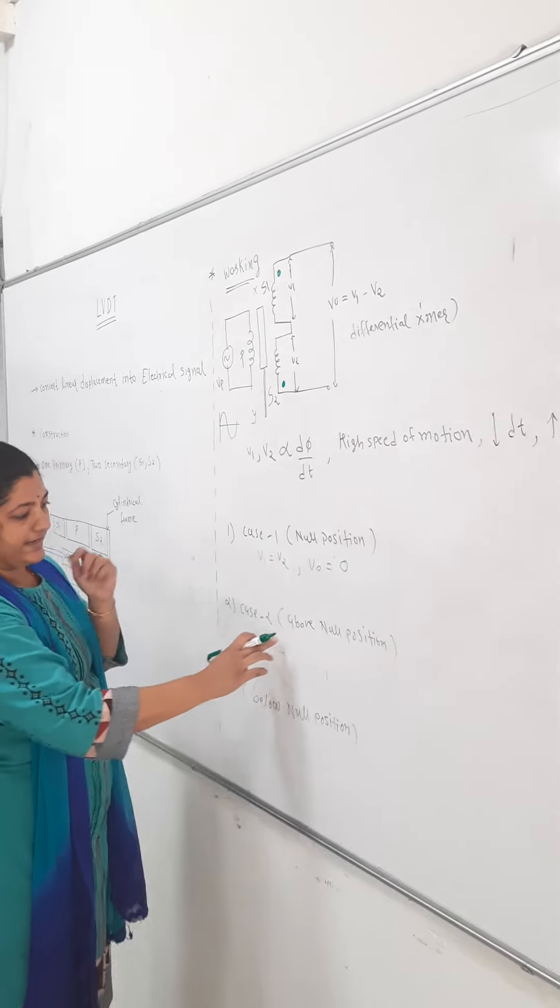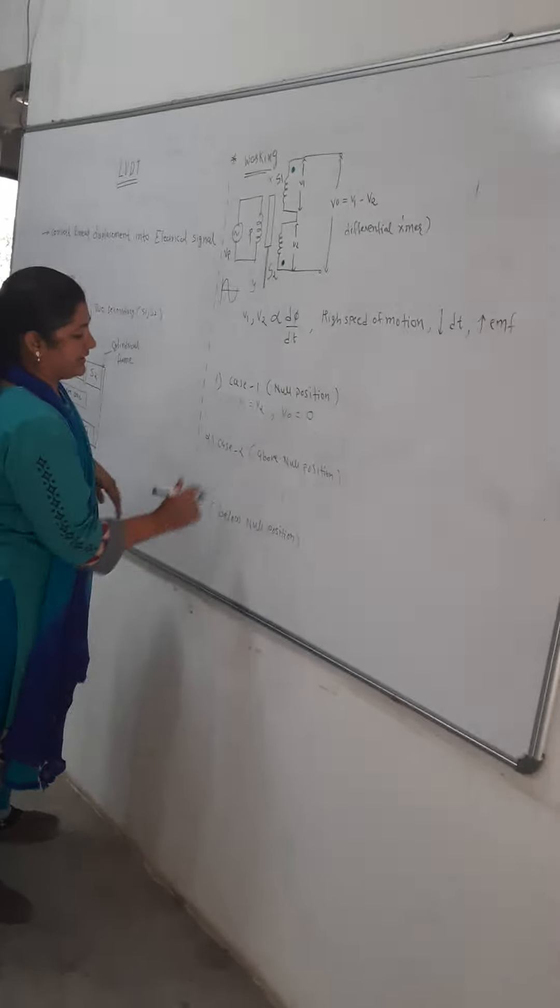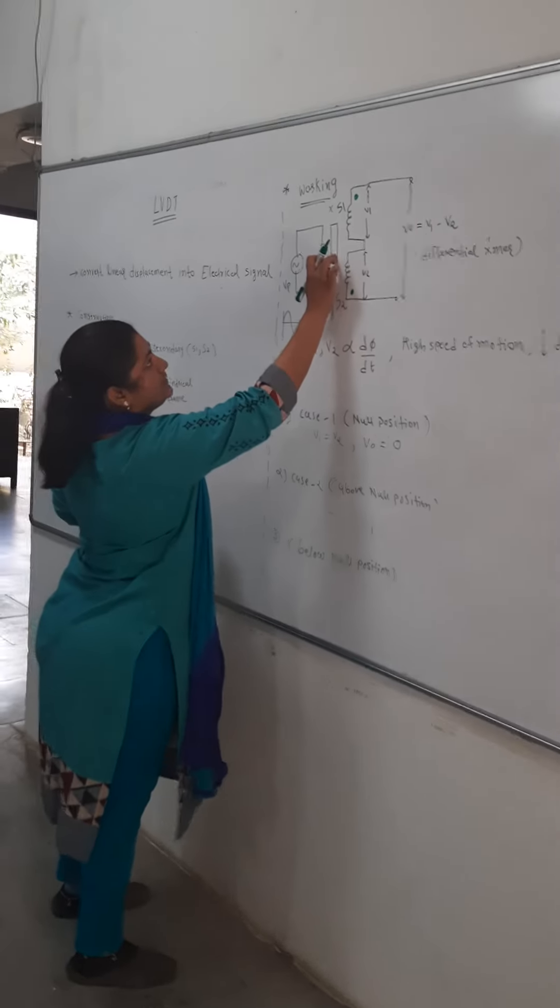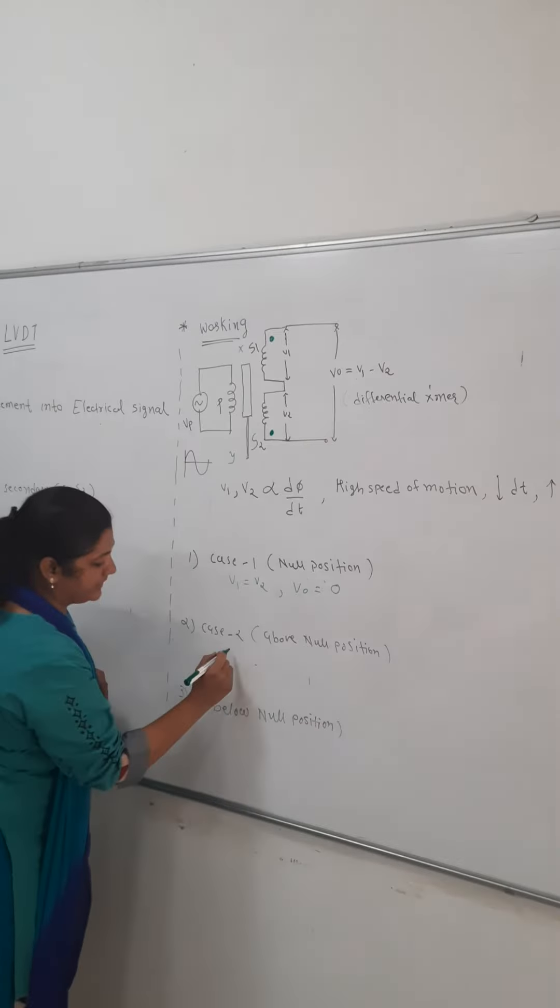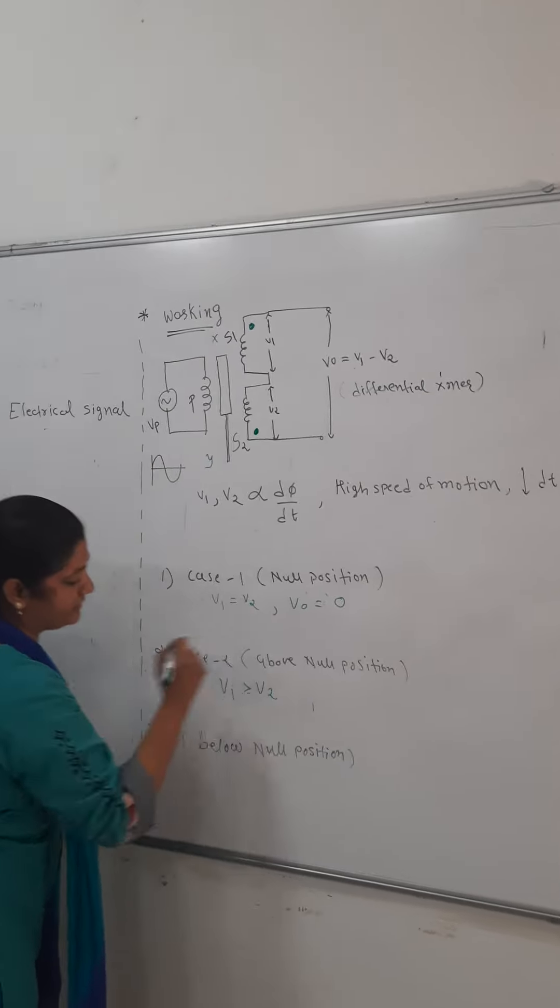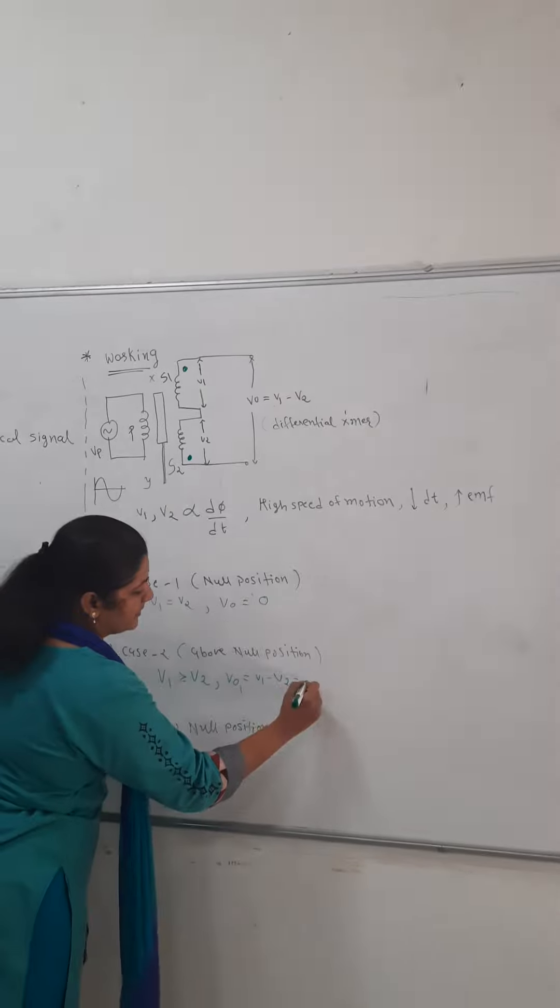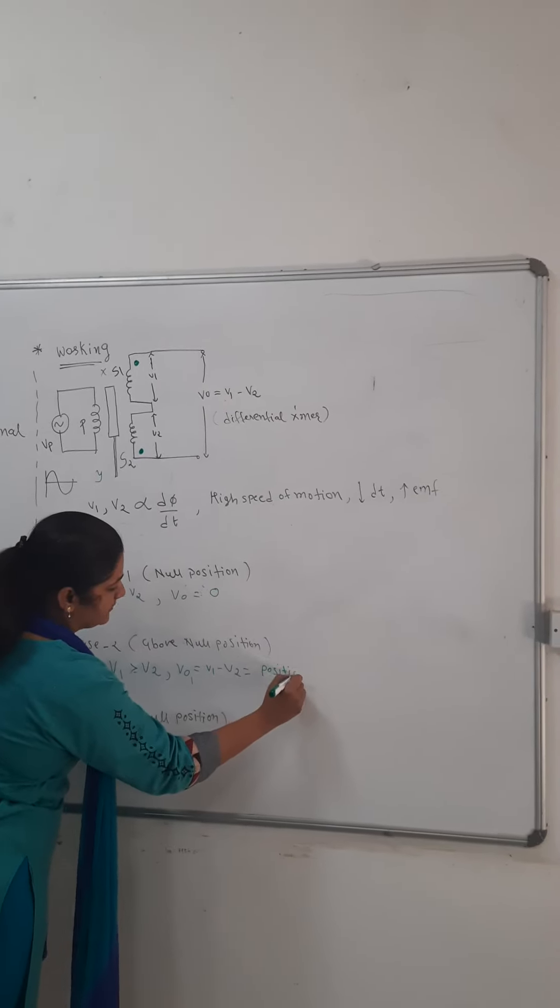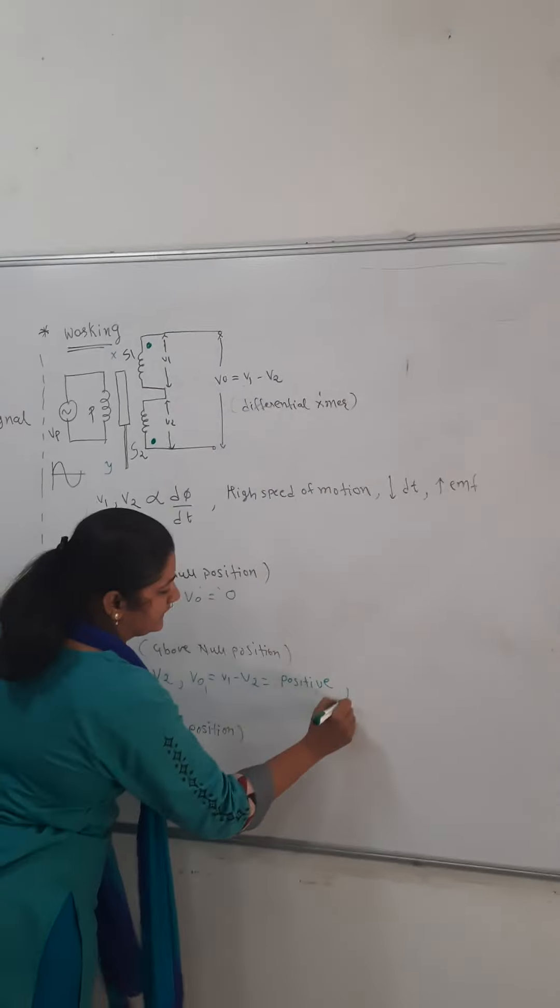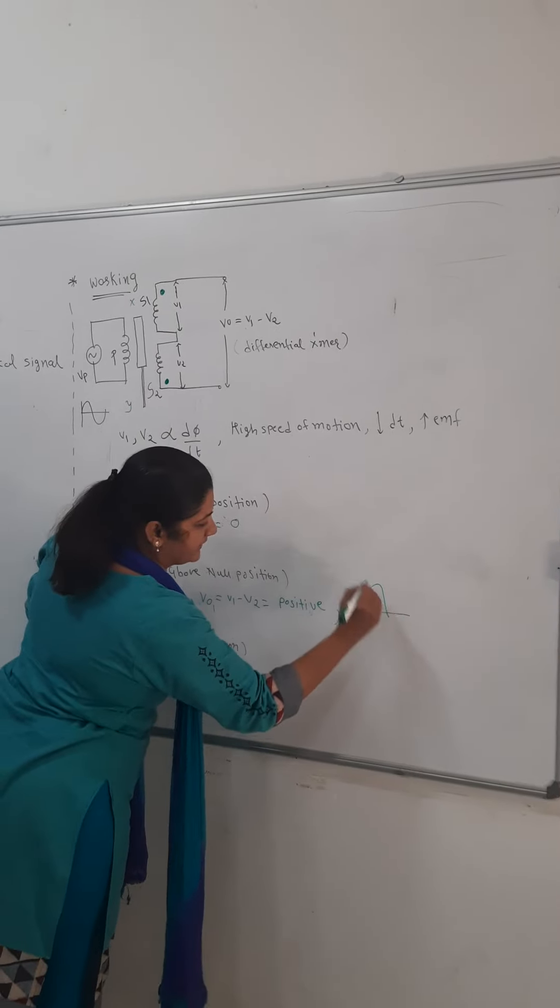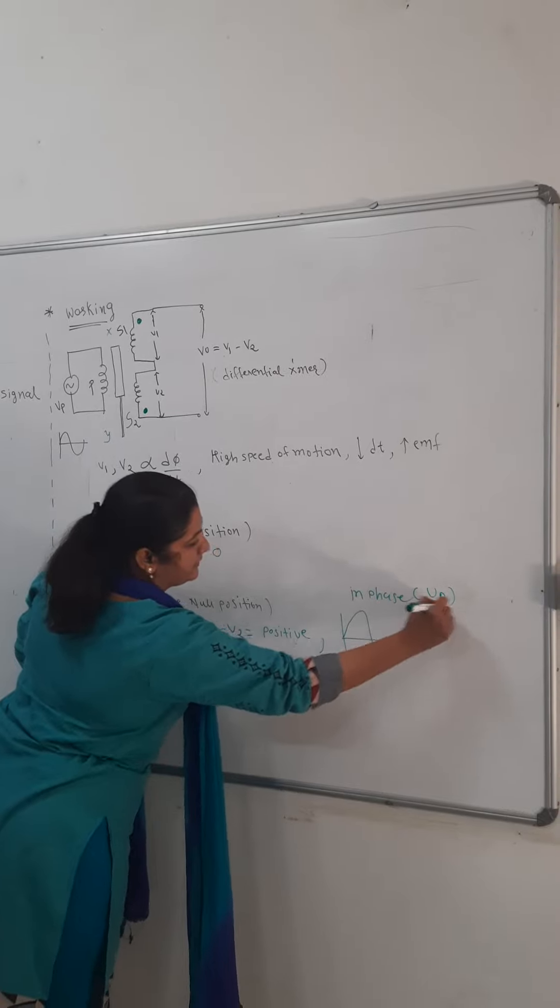Now, this is known as the null position or reference position. Go with case 2. Now, we can assume the core position is above the null position. At that time, what happens? If this core is above the null position, the dφ/dt will be greater in S1 compared to S2. Means V1 will be greater than V2. As we know that the resultant voltage is V1 minus V2, it means it will be positive in nature. Why? Because we have V1 greater. If V0 positive, it means the waveform of this V0 will be in phase with Vp which is the primary voltage.